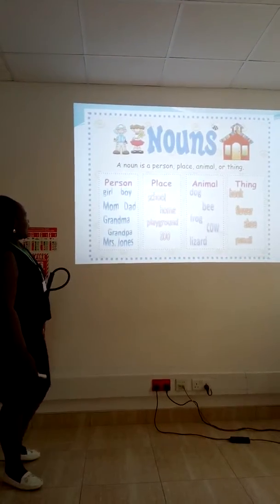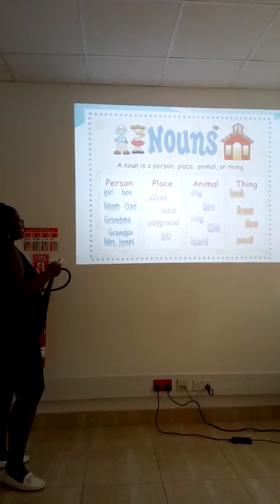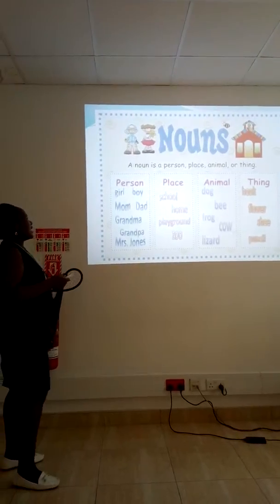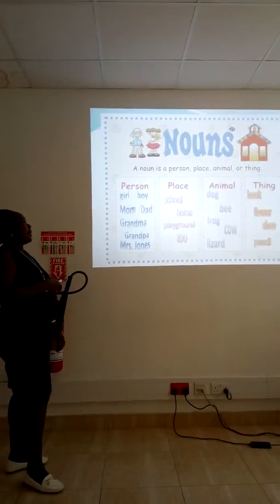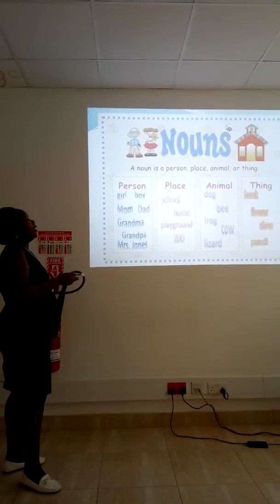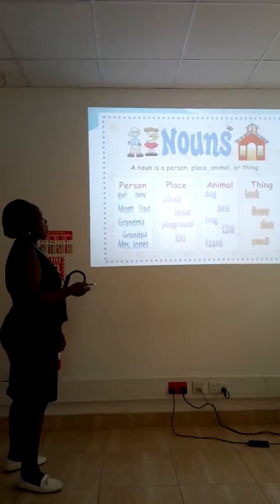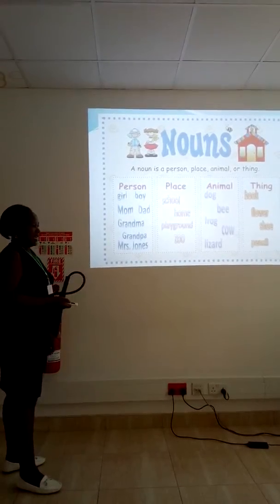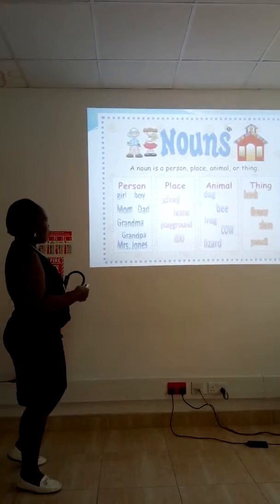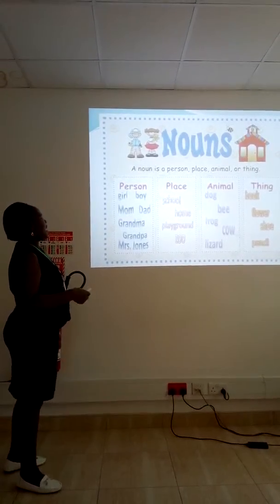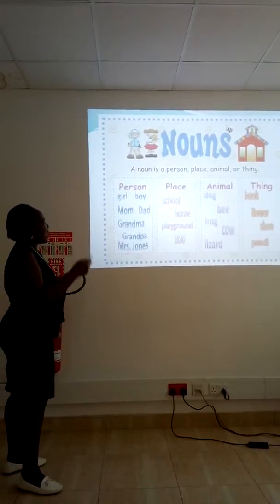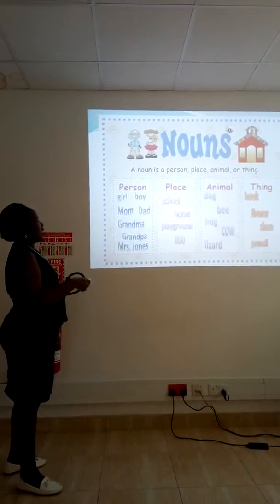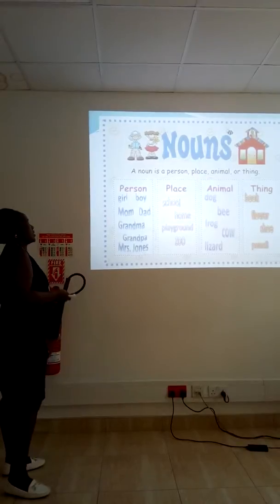A noun or nouns can be defined as names of people, names of places, names of animals or things. So a word that is naming something — a person, a place, or an animal — is what we are referring to as nouns.